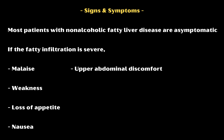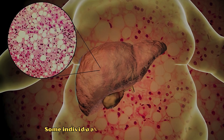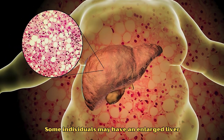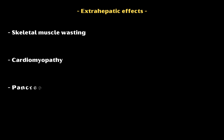About 15% of patients may also have jaundice or yellowish discoloration of skin and eyes. Some individuals may have an enlarged liver. Extra-hepatic effects such as skeletal muscle wasting, cardiomyopathy, pancreatitis, or peripheral neuropathy may also be present.